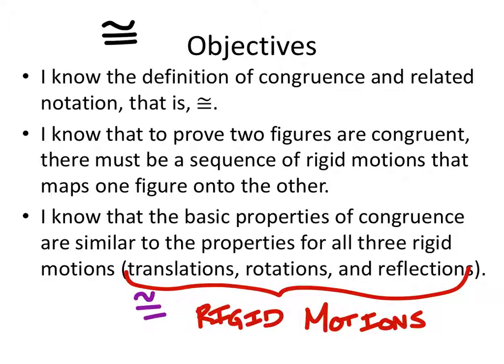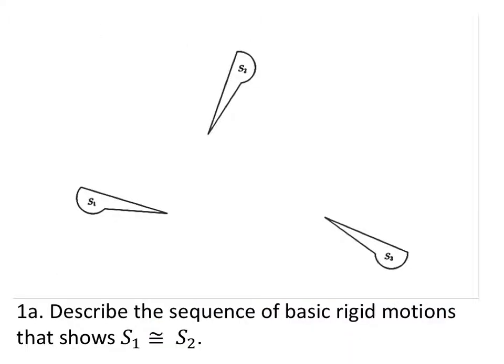That sounds very good, congruent, but we're good. Describe the sequence of basic rigid motions that shows shape one is congruent to shape two, so we're just looking at this one and this one right here.